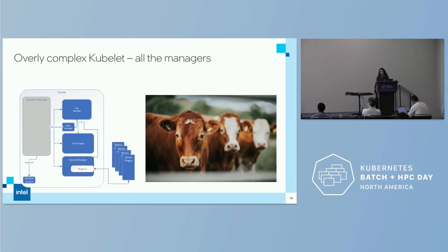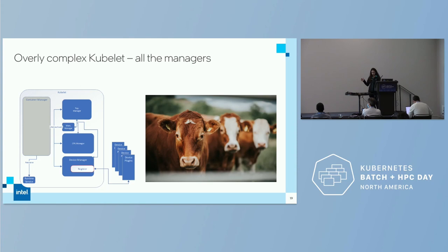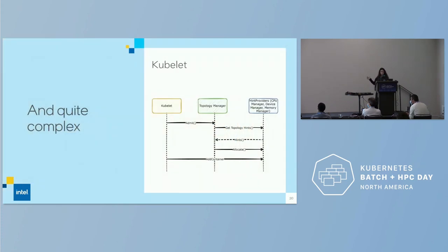One thing I'd really like to see fixed in Kubernetes is what Alexander Konevsky — he goes by Sasha, also at Intel — calls the 'herd of managers.' Inside the kubelet there are four managers: topology manager, memory manager, CPU manager, and device manager. All of these have to talk to each other for scheduling resources into the right NUMA zone, and this doesn't even work correctly in most cases. Any time you make changes or updates, you have to make sure it works with all of your managers.